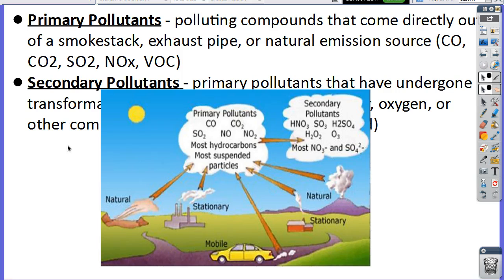Pollutants are emitted, and those are primary pollutants — if they come directly out of a tailpipe or directly out of a factory smokestack, those are primary pollutants. Eventually, chemical reactions in the air can convert those pollutants into secondary pollutants. And that's what smog is — smog is a secondary pollutant.